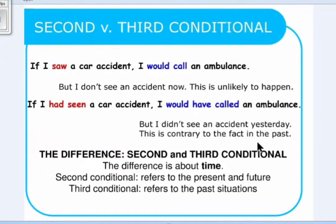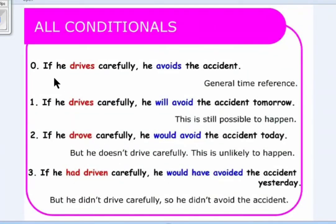So the first sentence is in the present time and the second one is in the past time. The difference between the second and third conditional is about time. The second conditional refers to the present and future — like the first conditional — while the third conditional refers to past situations. In the second, the situation is unlikely to happen; in the third, it refers to past situations.